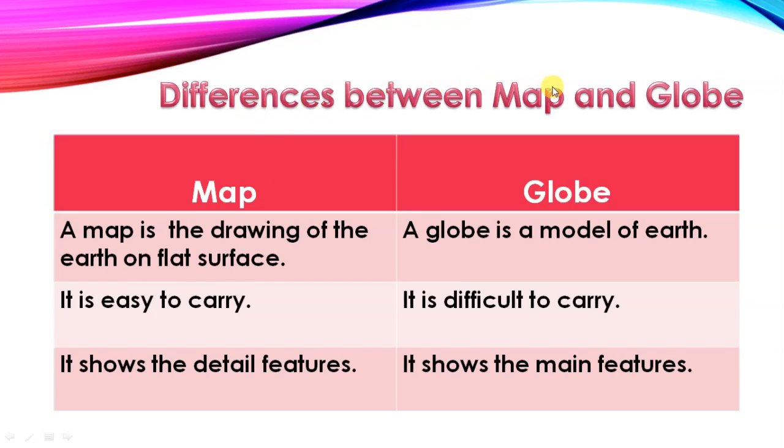Now, differentiate between map and globe. Map: Map is the drawing of the earth on a flat surface. Globe is the model of earth. It is easy to carry. It is difficult to carry. It shows the detailed features because it shows the main features.